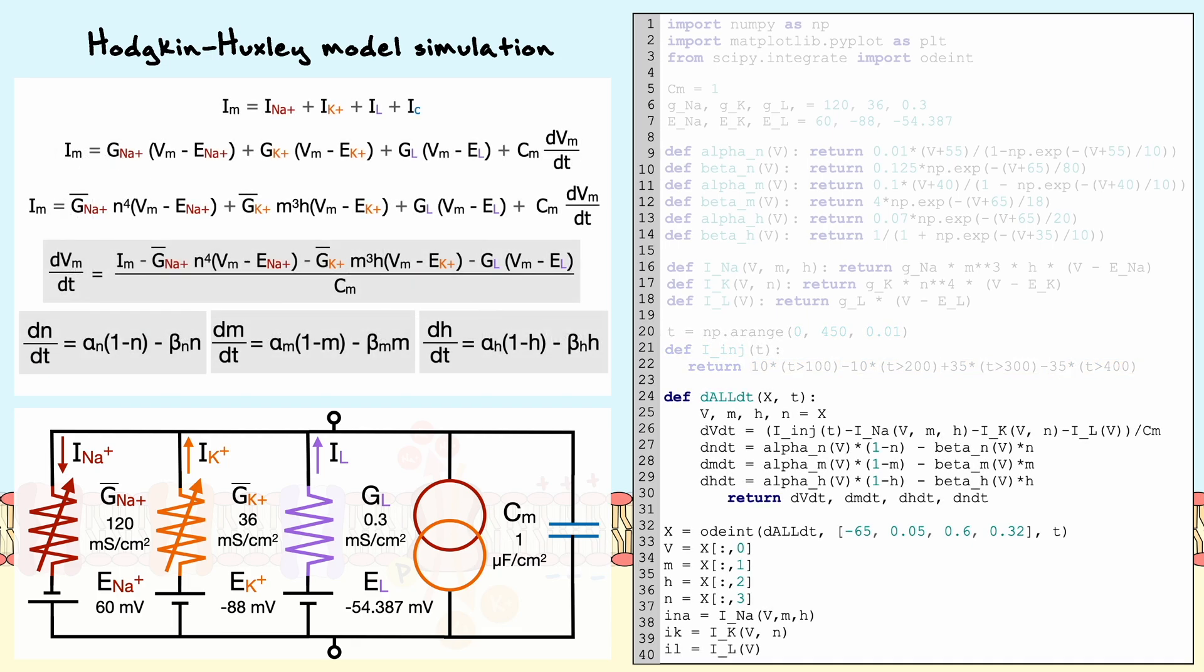Now, the next part of our code is to solve the differential equations of our model. The first important differential equation comes from the sum of all currents, in which if we substitute the definitions of the currents with what we've established, we can isolate the derivative of the membrane potential with respect to time.